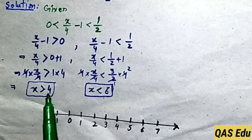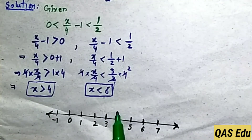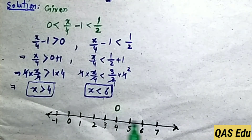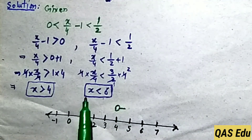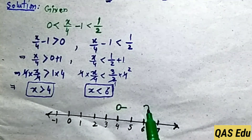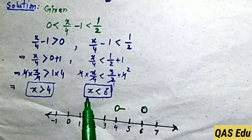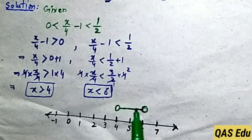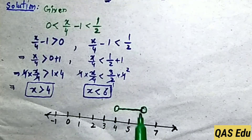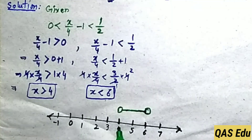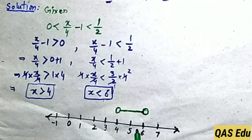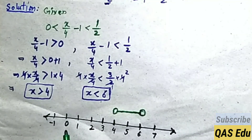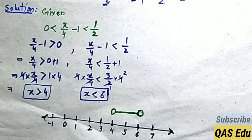x is greater than 4: since x equals 4 is not included, draw an empty circle at 4, arrow pointing right. x is less than 6: since 6 is not included, draw an empty circle at 6, arrow pointing left. The solution set is values between 4 and 6, not including endpoints — for example 4.1, 5, 5.9 are all valid. This is the solution set shown on the number line.